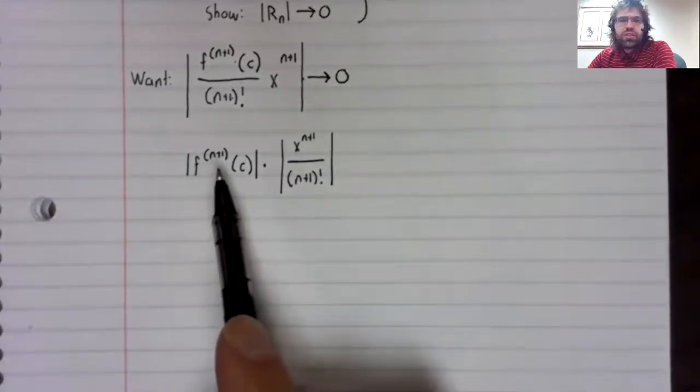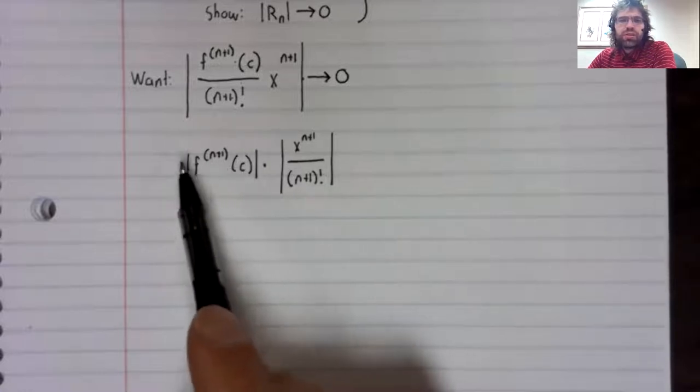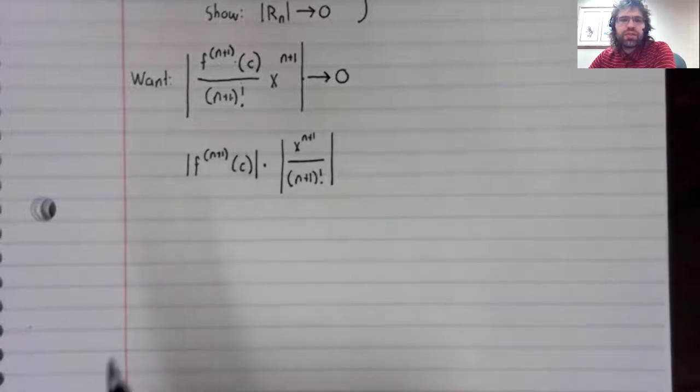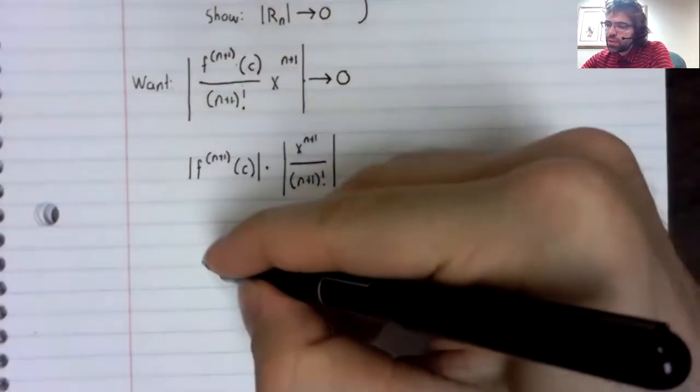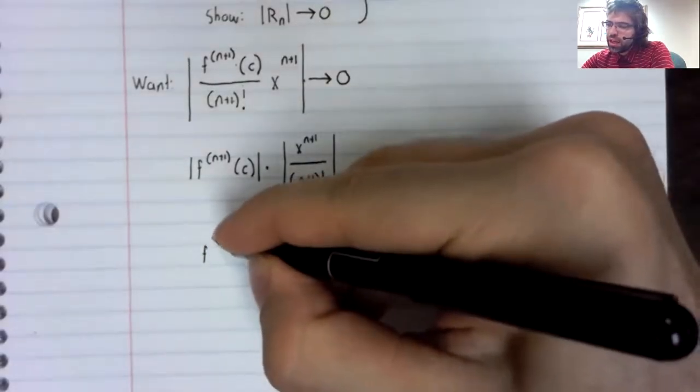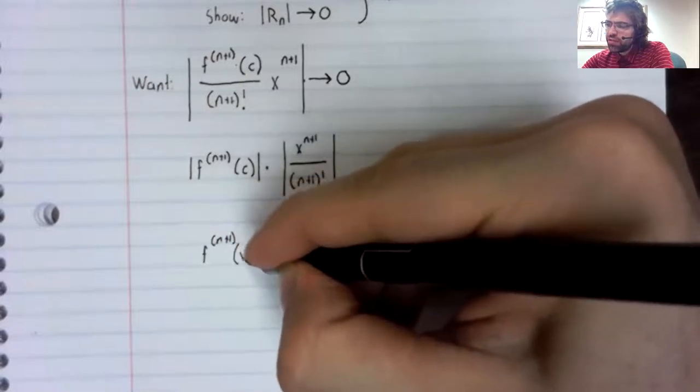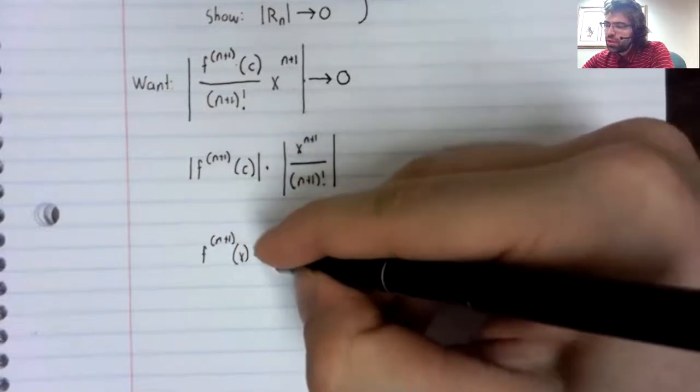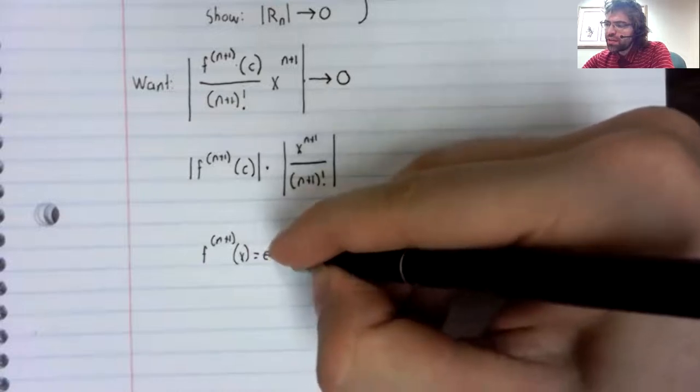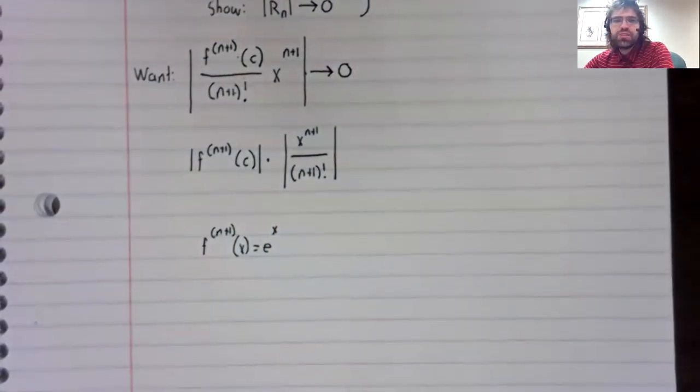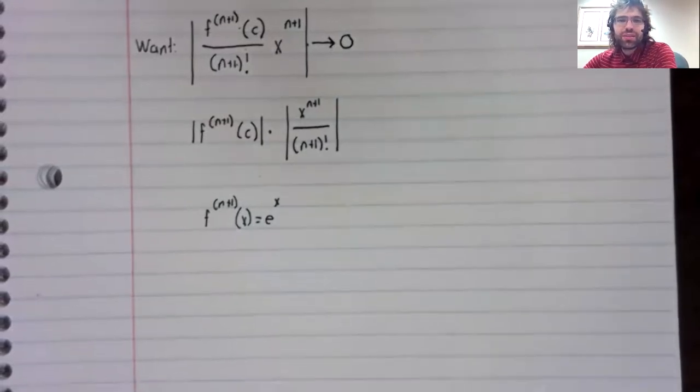And let's consider this part of the expression. The n plus first derivative of e to the x is e to the x.